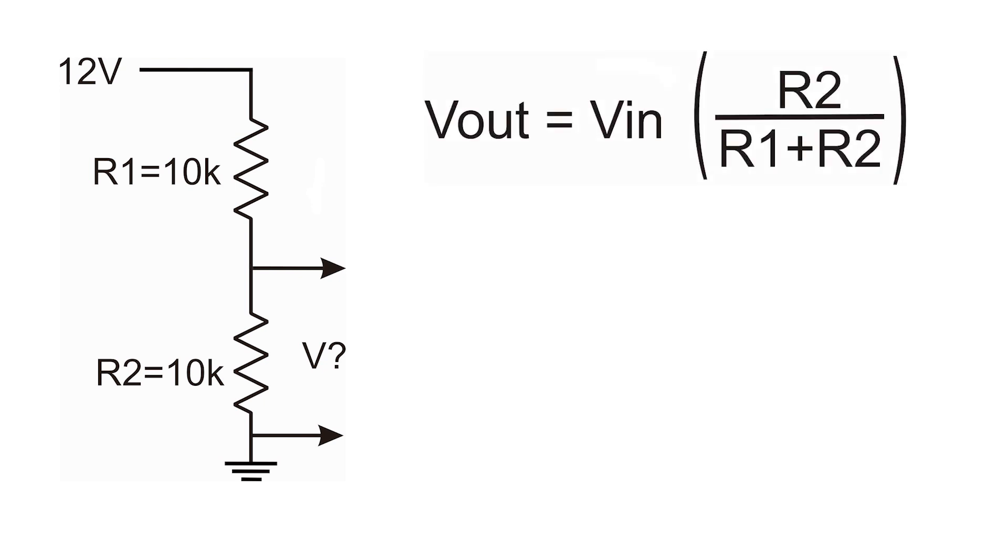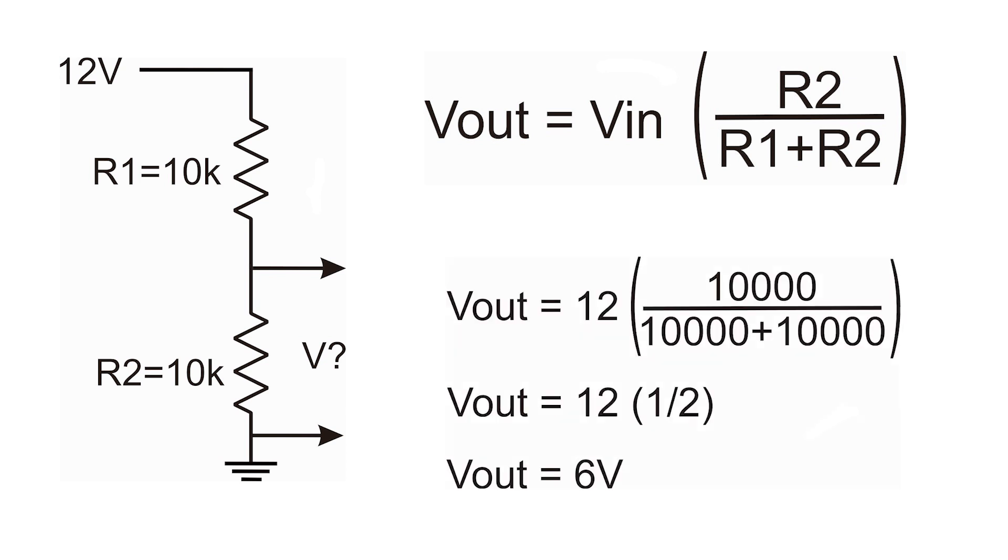Now how to calculate the output voltage of the voltage divider. To do this we have this equation. So in this example the Vout would be half of the input, or it is 6 volt.